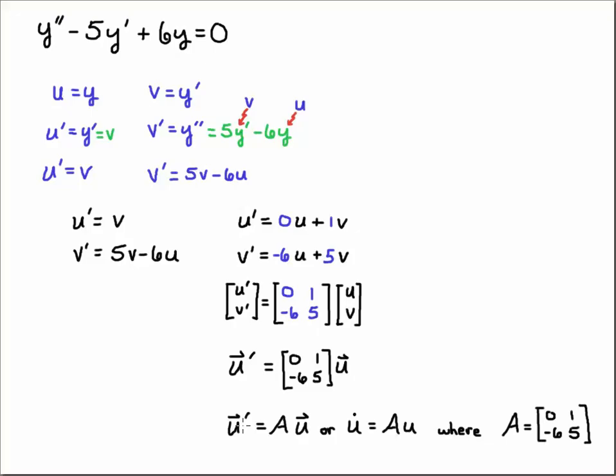And then you might see more generically written as the vector u-prime is equal to A times u, or u-dot, where dot is the derivative typically with respect to time, but it just could represent the derivatives. So you might see the dot notation. So sometimes you'll see u-dot is equal to Au, where A is this matrix. So that's just another notation you may see sometimes.